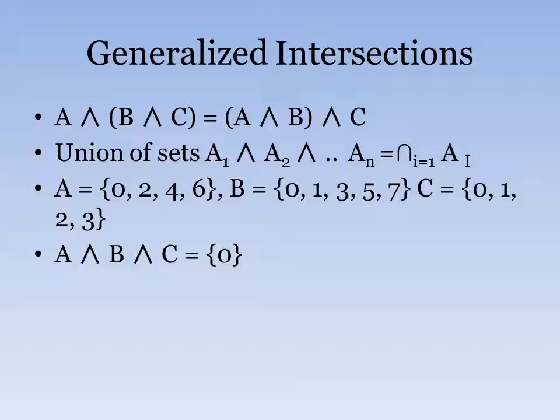And just as with generalized unions, we could denote it with subscripts. We could do the same thing for intersections. So if we have three different sets as we have here, we could do the intersection as before, as we did before, and combine them into one generalized intersection. And we could get the set identity as being 0.